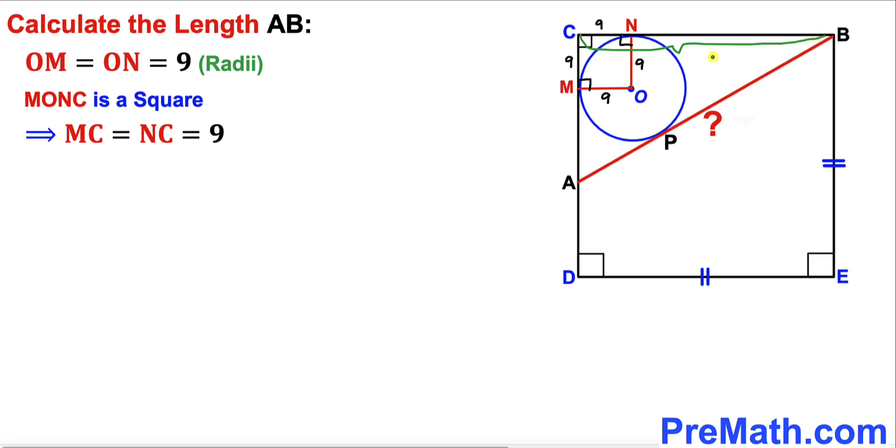Therefore, length NB is going to be 45 minus 9 equals 36 units.